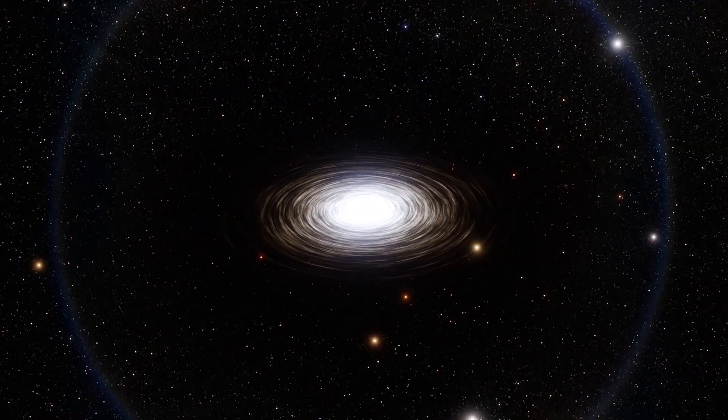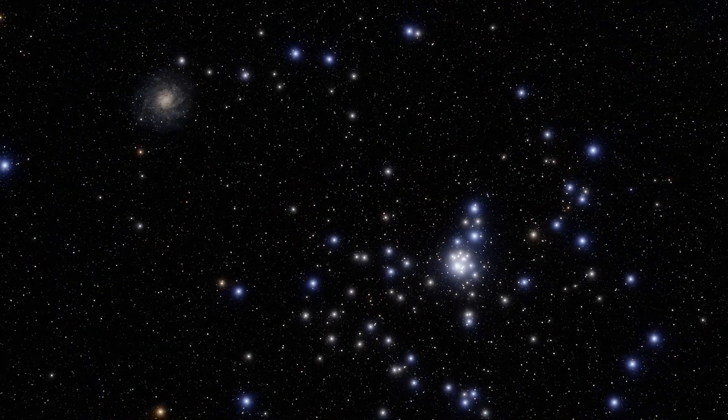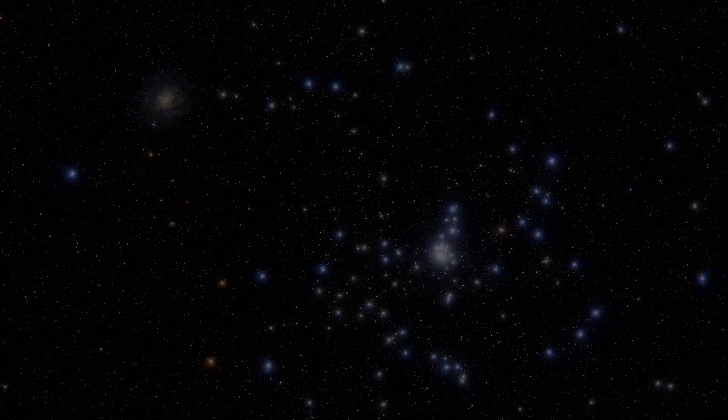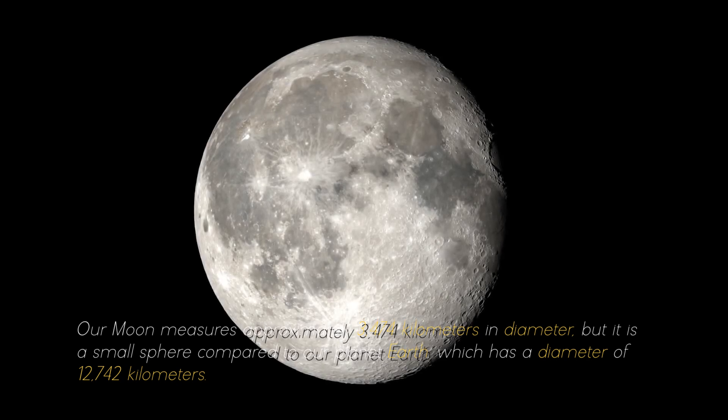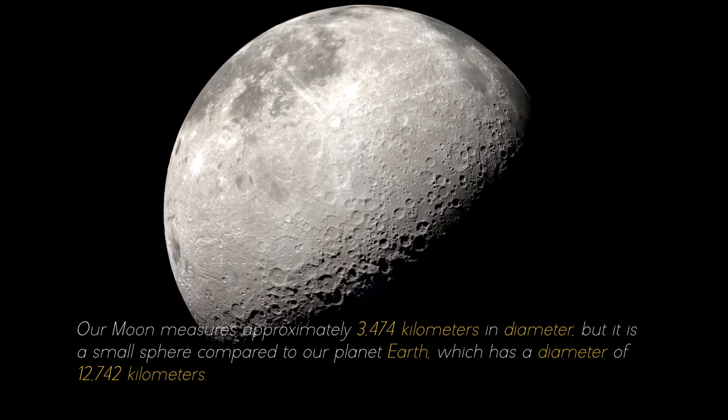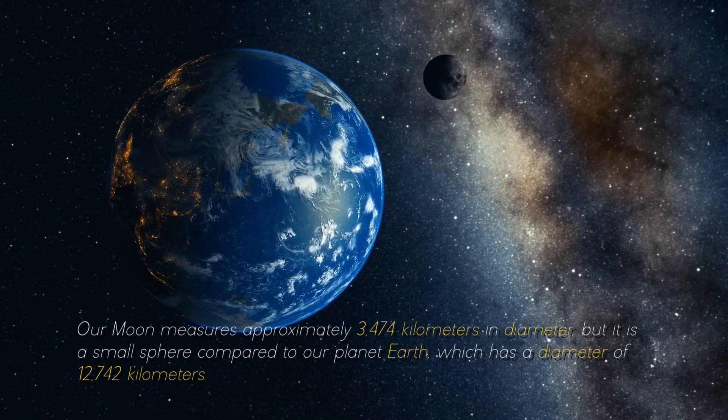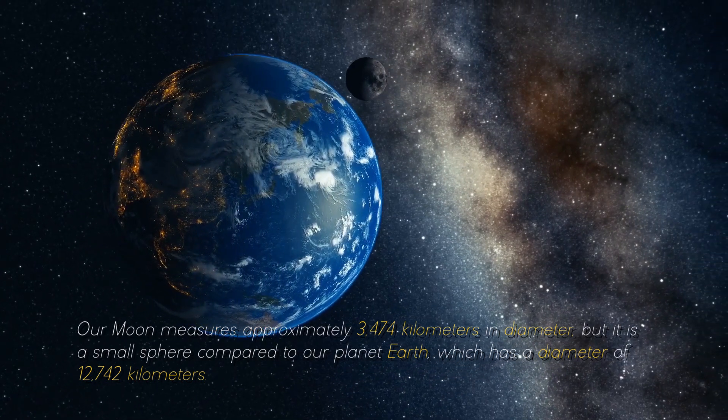To give you an idea of the colossal objects and structures that abound in the cosmos, it is necessary to start at the beginning. Our moon measures approximately 3,474 kilometers in diameter, but it is a small sphere compared to our planet Earth, which has a diameter of 12,742 kilometers.